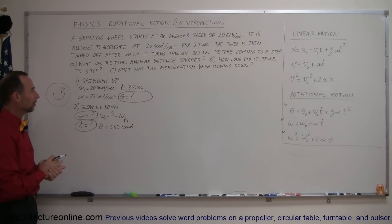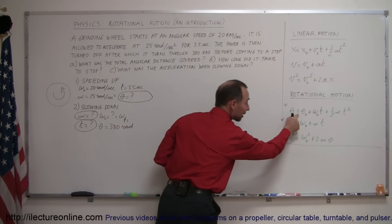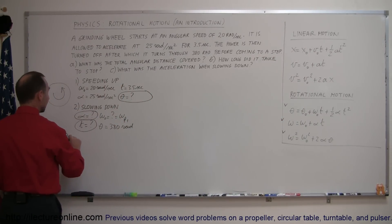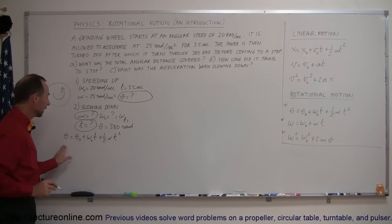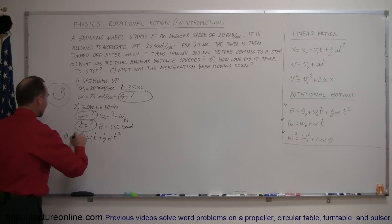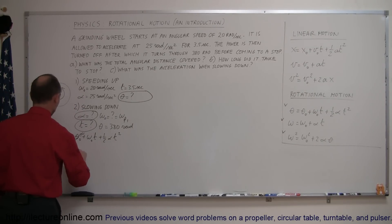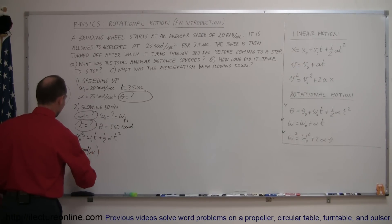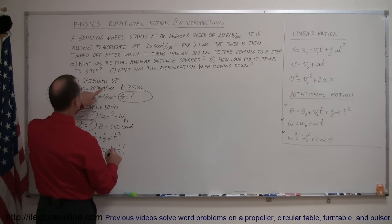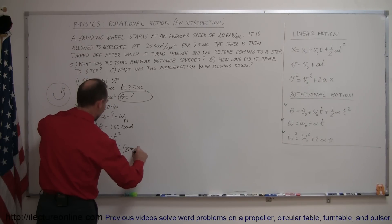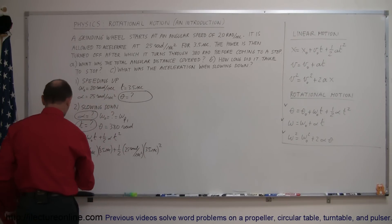Now we have a better idea of how to attack this problem. Going back to part one — we know omega initial, we know alpha, we know t, we need to know theta — and the first kinematic equation is the best one to use. So: theta equals theta-naught plus omega-naught times t plus one-half alpha t squared. We can drop theta-naught, assuming no angle was covered at t equals zero. That gives us 20 radians per second times 3.5 seconds plus one-half times 25 radians per second squared times 3.5 seconds squared.